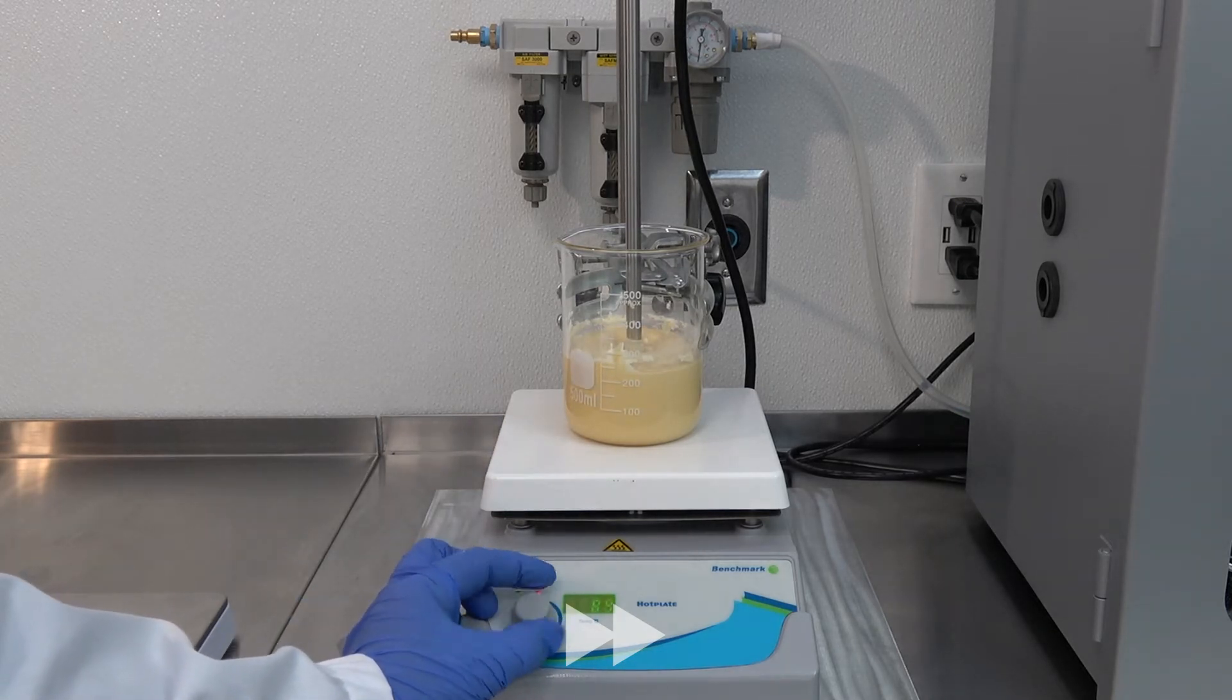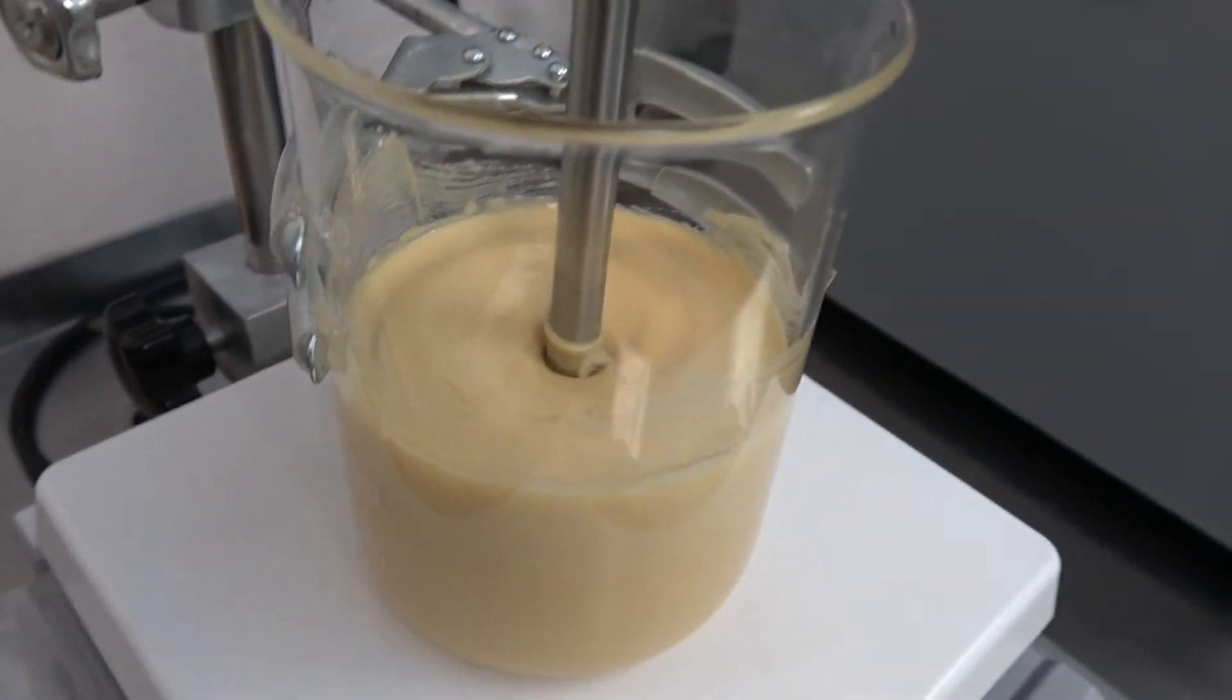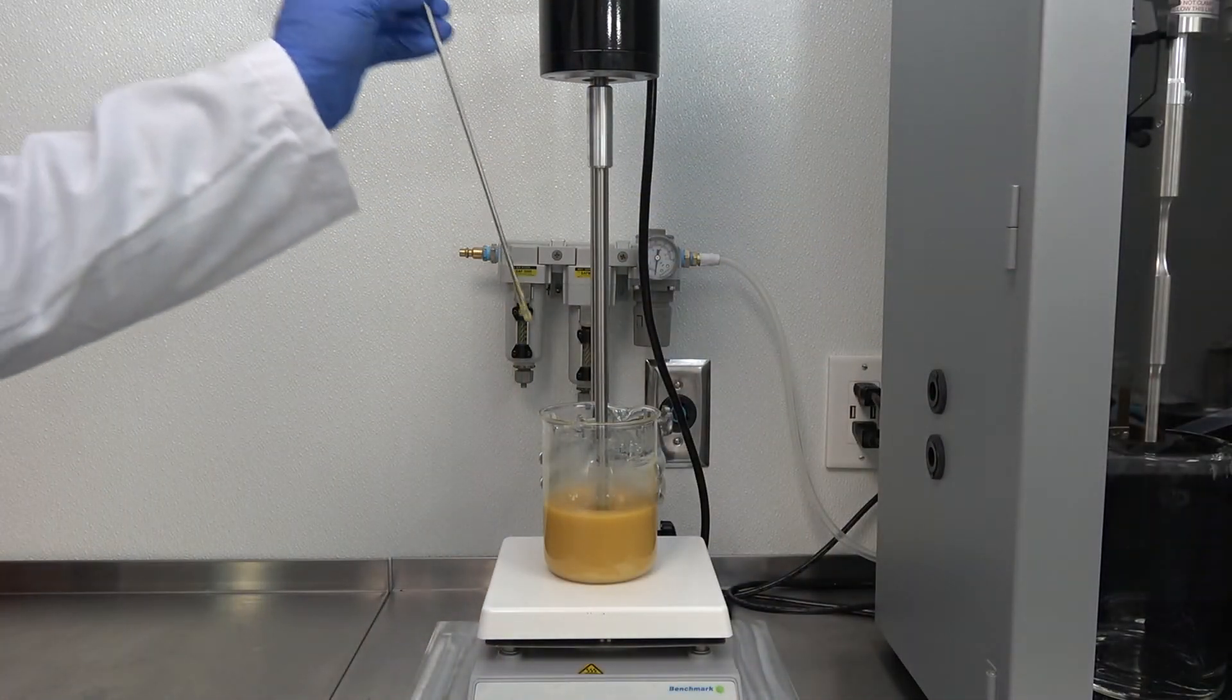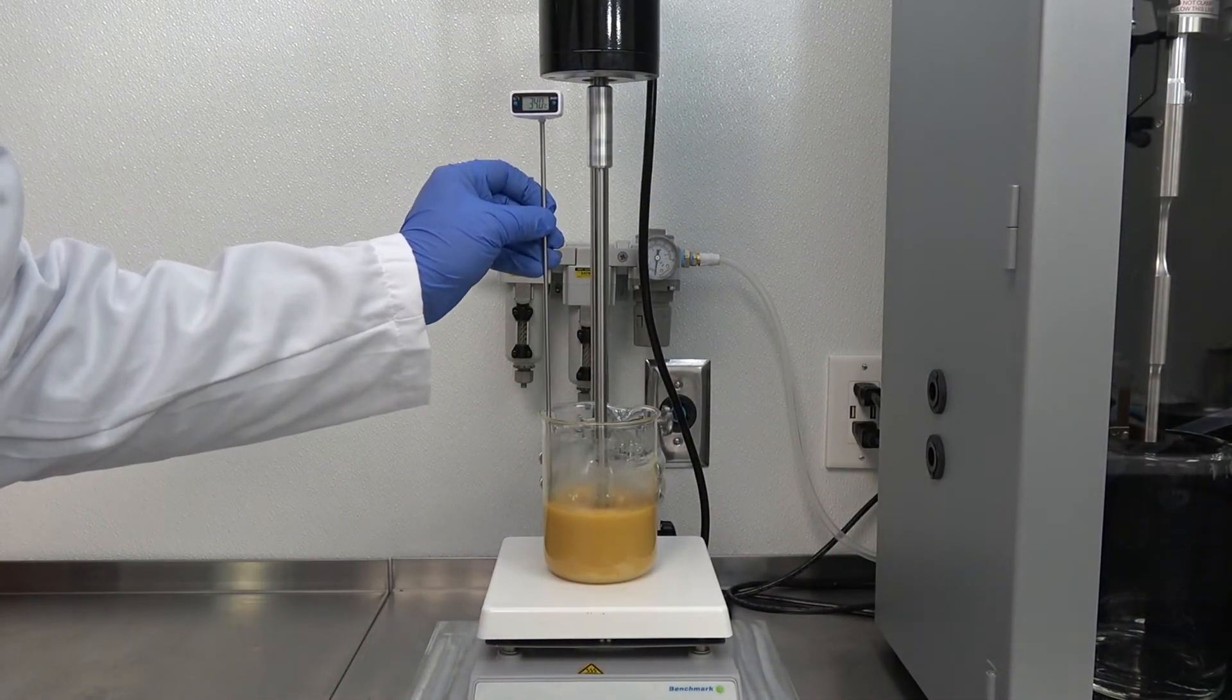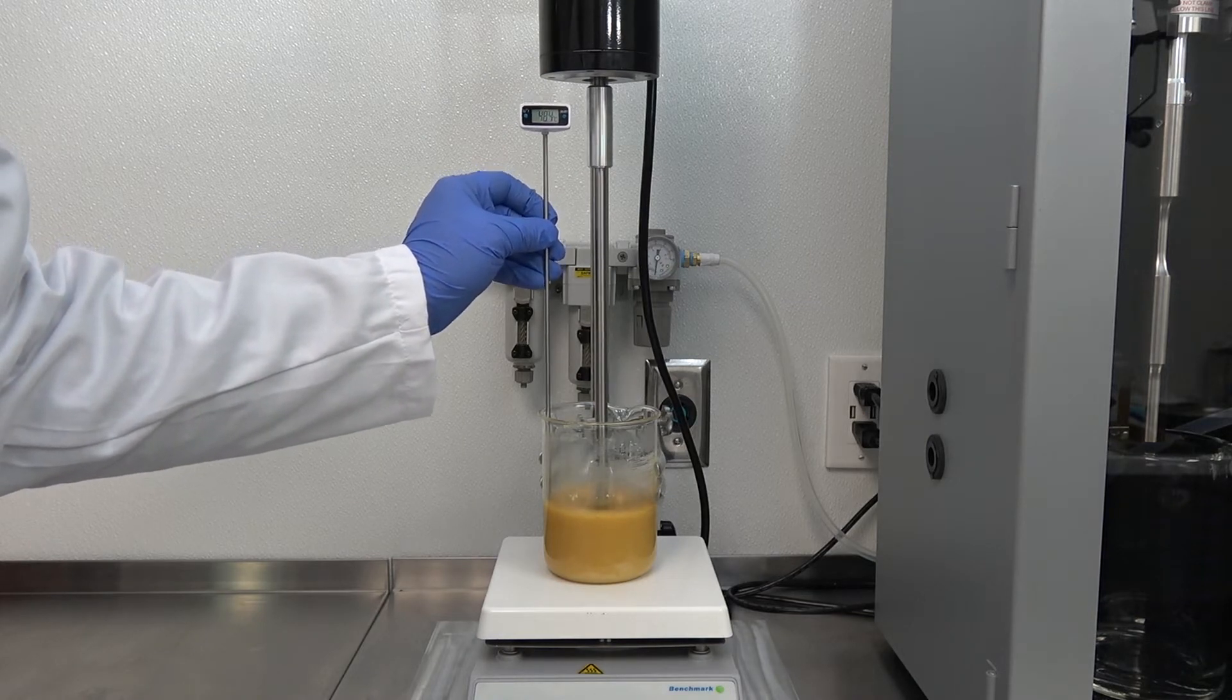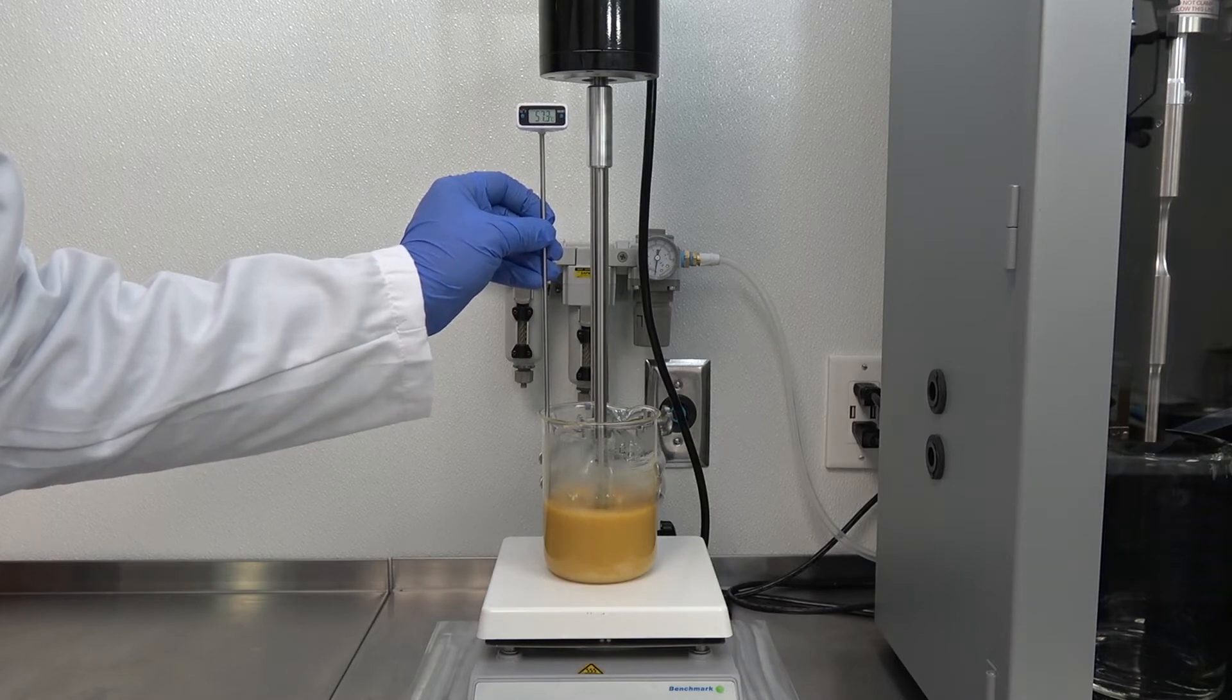Initial hand mixing in a hot water bath followed by machine mixing can accelerate the mixing process. As the active ingredient melts around 65 degrees Celsius, you'll notice a color change in the material. The viscosity will also drop dramatically.